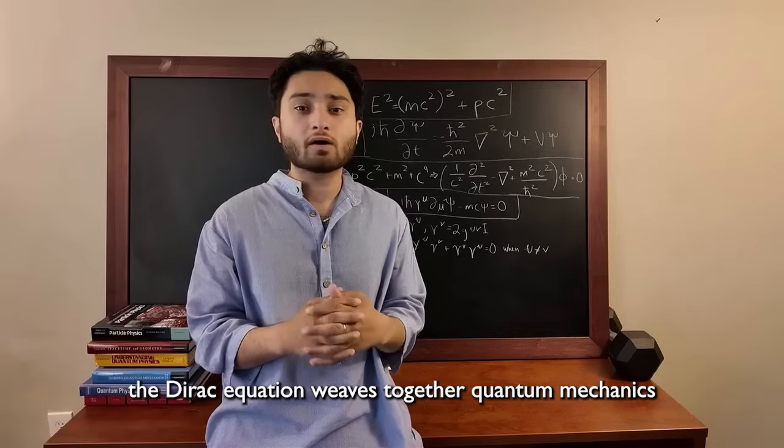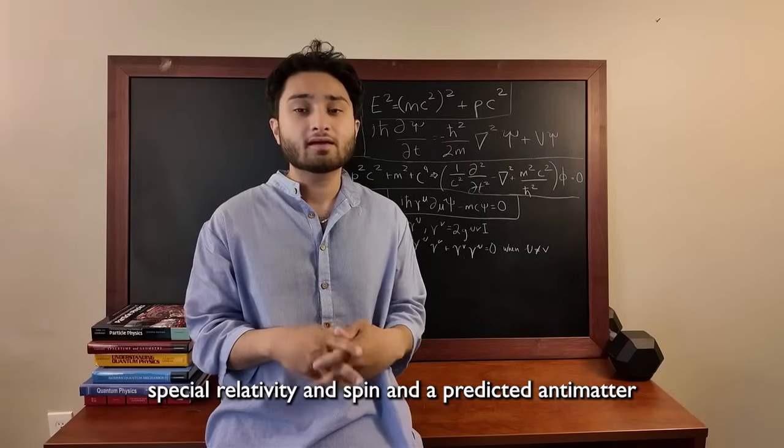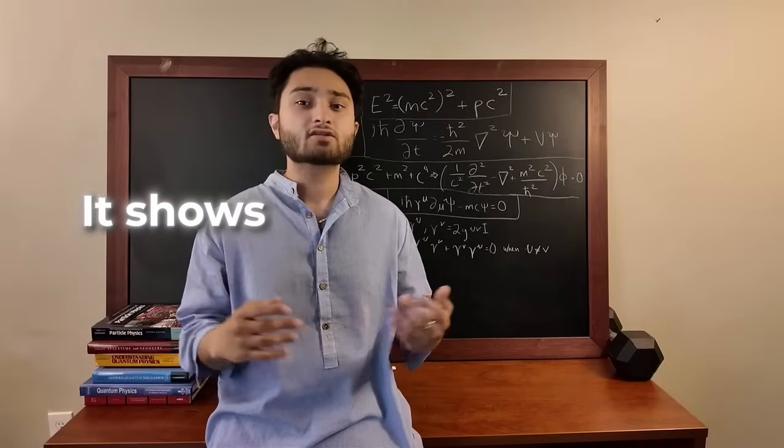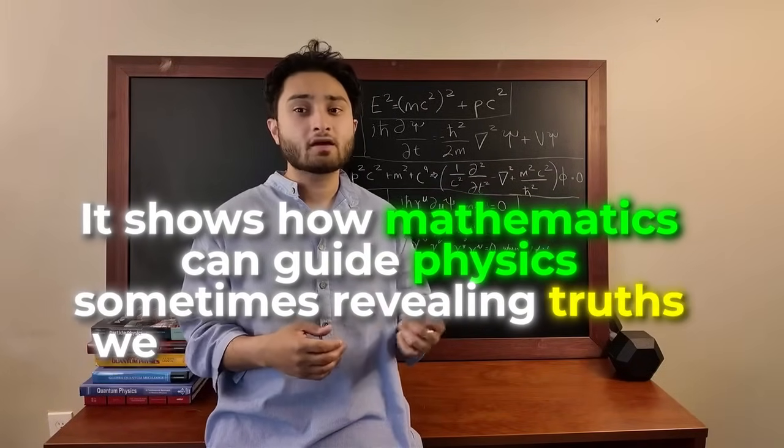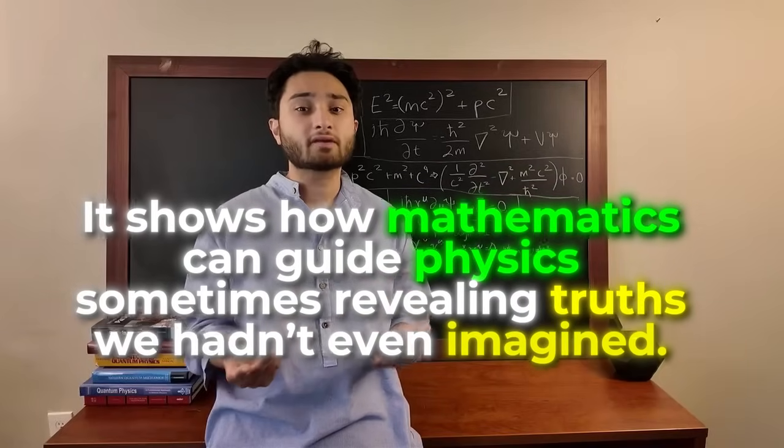So what started as a fix to the Schrodinger equation led to one of the greatest insights in physics. Dirac's equation weaves together quantum mechanics, special relativity, and spin, and it predicted antimatter. It shows how mathematics can guide physics, sometimes revealing truths we hadn't even imagined.